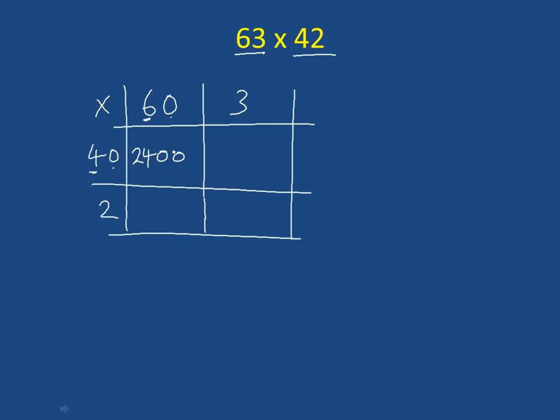Next, I'm going to do 2 times 60. Again, I'm going to do 2 times the 6, which is 12, and add on how many zeros. Well, there's one zero. And then over here in this box, we're going to do 40 times 3. So we would do 4 times 3 is 12 and add on a zero. Finally, in the last box, we're going to do 2 times 3, which is 6.